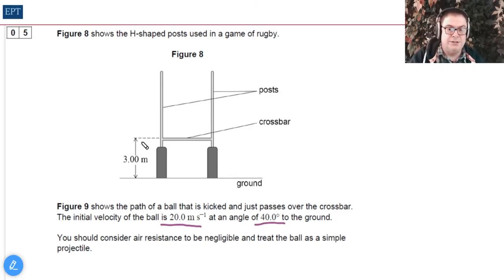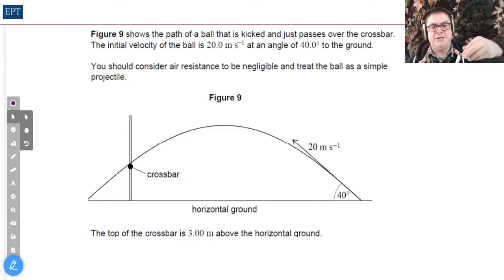You can see that the initial velocity of the ball is going to be 20 m/s, the angle is going to be 40 degrees, and we've got these crossbars at three meters. Figure nine shows the path of a ball that's kicked and just passes over the crossbar. Initial velocity is 20 at an angle of 40 degrees to the ground. As always, consider air resistance to be negligible, and the top of the crossbar is three meters above horizontal ground.